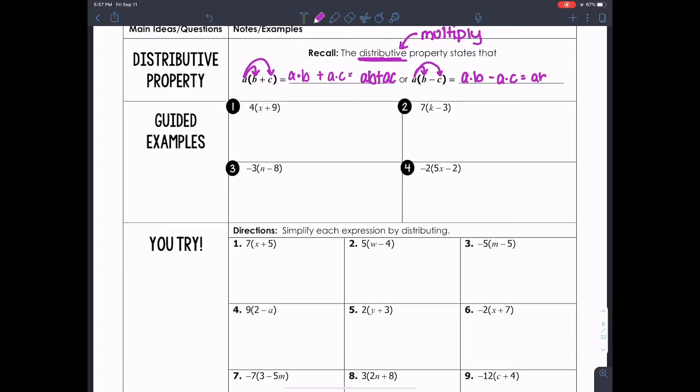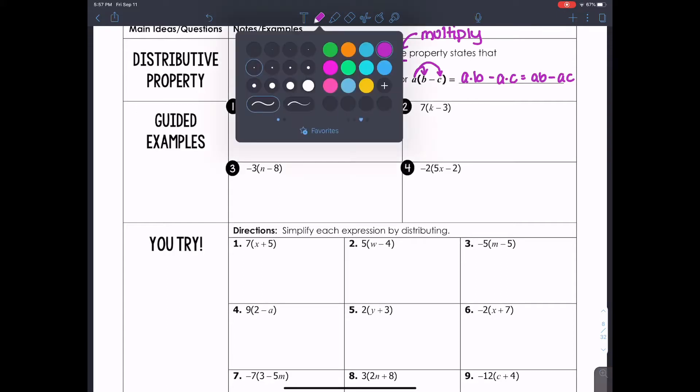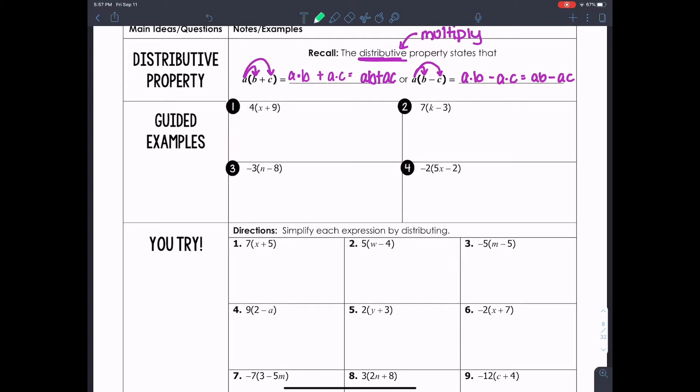Very good. So with this comes our integer operations. Remember, if you forgot those, there is a video we can go back and look at. So let's try these together. What I'm going to do is I'm going to distribute 4 times X, which gives me 4X. Then I have 4 times 9, and they're both positive. So I'm going to write 4 times 9. So my final answer is 4X plus 36.